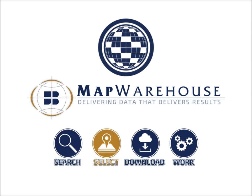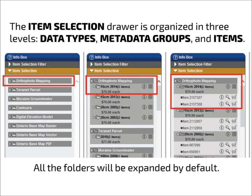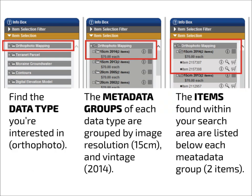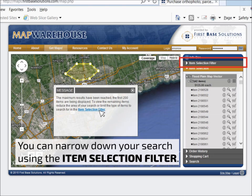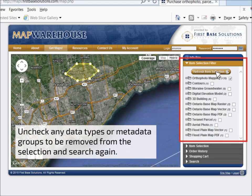Chapter 2: Select. Take a closer look at the item selection drawer. You'll see data types, metadata groups, and individual items. First, find the type of data that you're interested in. In this example, we'll look for orthophoto mapping. Expand the orthophoto mapping folder and you'll see metadata groups. The metadata groups represent the different types of orthophoto that are available. Expand any of the metadata groups' folders and you'll see the individual items that cover the area of interest you searched earlier. Use the item selection filter to remove unwanted data types from your search results.